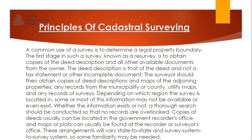The deed description is that of the deed and not a tax statement or other incomplete document. The surveyor should then obtain copies of deed descriptions and maps of the adjoining properties, any records from the municipality or county, utility maps, and any records of surveys. Depending on which region the survey is located in, some or most of this information may not be available or even exist.